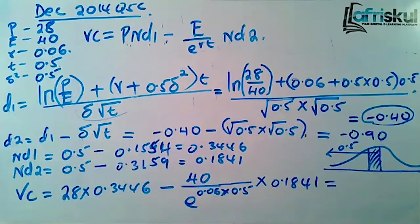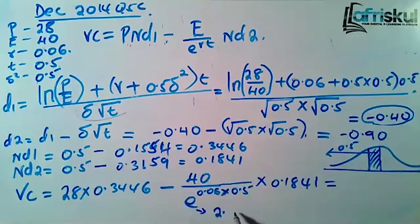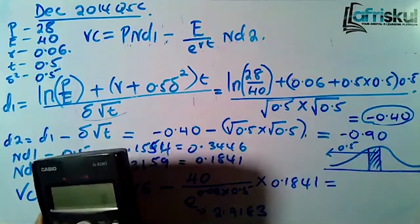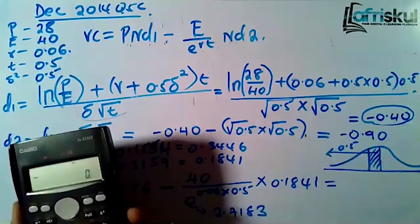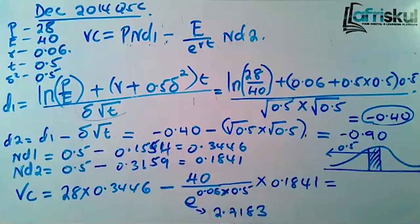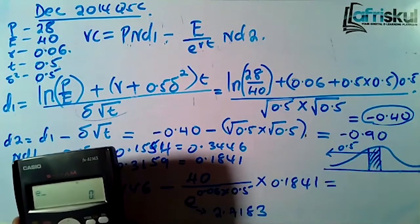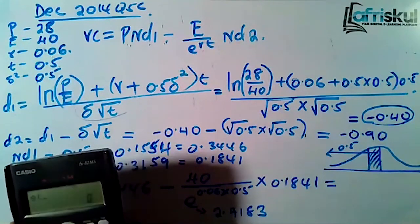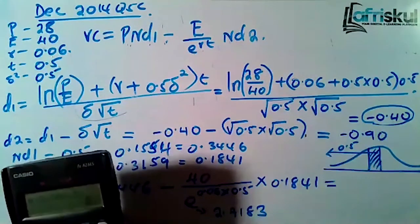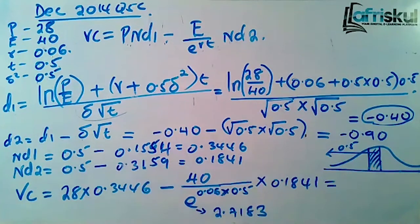For those who want to use e directly, note that some people write it as 2.7183. On the calculator, use the shift-e function. Don't write 'less to power' as that will give a syntax error. Just use e as it is: open the bracket, take 0.06, multiply by 0.5, close the bracket. Now you can continue and compute the final answer.